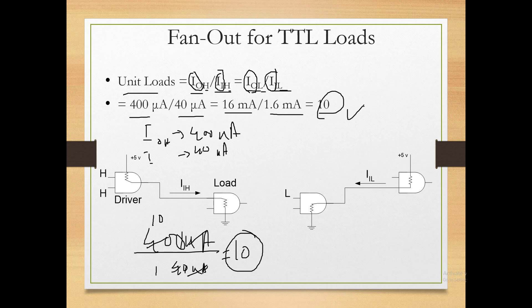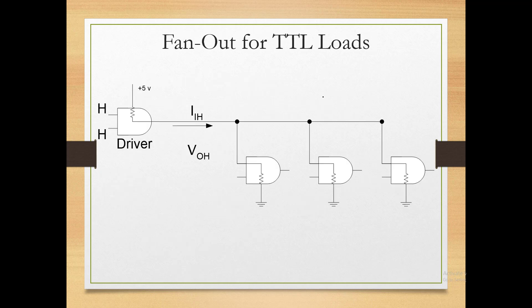Similarly for logic low: 1.6 mA is required while the IC outputs 16 mA — same ratio. IOH is 400 µA and each input requires 40 µA. Since the output is at logic high, 400 µA is distributed among 10 gates × 40 µA. Providing less than 400 µA total means no problem; but if you exceed 10 gates, current per gate drops below 40 µA, which causes incorrect output values.